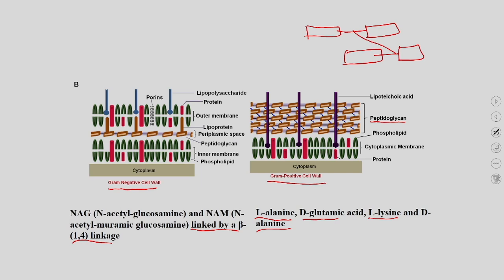Next to the peptidoglycan layer in gram-positive bacteria, you have phospholipid and lipoteichoic acid. In gram-negative bacteria, there is a very thin layer of peptidoglycan, and below this you have the plasma membrane and also LPS (lipopolysaccharide), which is present in gram-negative bacteria and is a source of antigenic reaction to the host. With the help of LPS on the surface of the cell wall, bacteria induce immune cells in the host and cause downstream immune reactions.